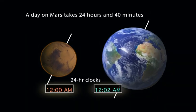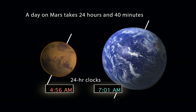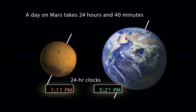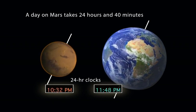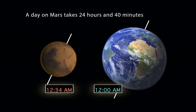Mars turns or rotates slightly slower on its axis than the Earth does. As a result, one day on Mars is 24 hours and 40 minutes.